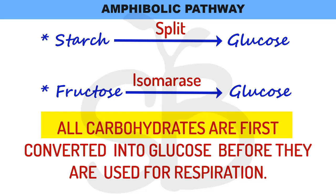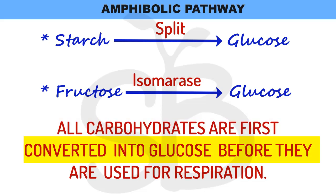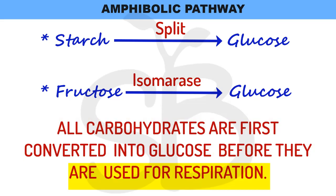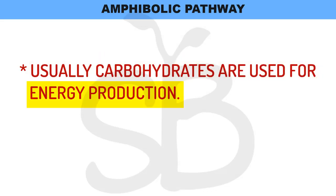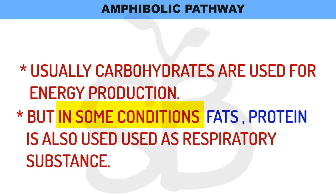All carbohydrates are usually first converted into glucose before they are used for respiration. In the beginning of our chapter, usually carbohydrates are oxidized for energy release. In the same plants, under different conditions, proteins and fats also serve as respiratory substances.